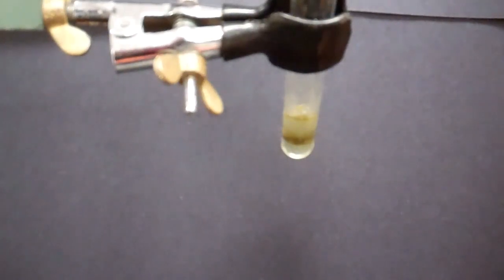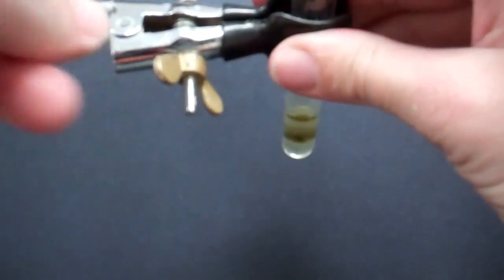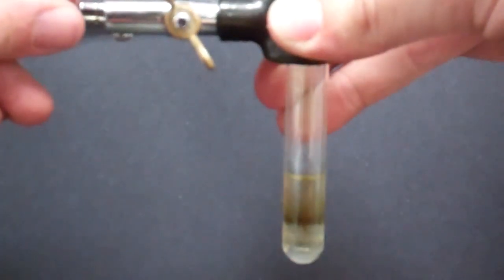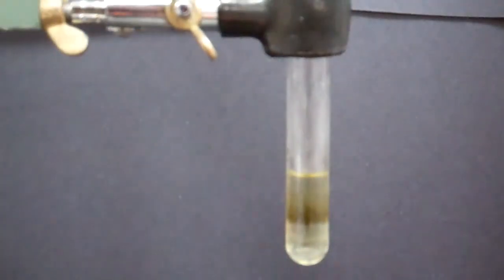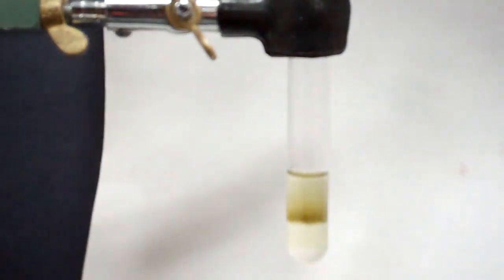We're letting that drip down the side of the test tube. We are not going to mix this step because what we're looking to form is at the boundary where these two solutions have come in contact. They've created a layer, and we're looking to observe a dark brown ring form between the two barriers.